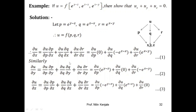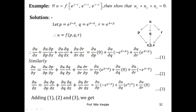Now adding ∂u/∂x + ∂u/∂y + ∂u/∂z, we have nine terms on the right-hand side. The ∂u/∂q term from ∂u/∂x cancels with the ∂u/∂q term from ∂u/∂y (opposite signs). The ∂u/∂r term from ∂u/∂y cancels with the ∂u/∂r term from ∂u/∂z. The ∂u/∂p term from ∂u/∂z cancels with the ∂u/∂p term from ∂u/∂x. All three pairs cancel, giving zero — hence proved. I hope you understood what a composite function is and how to differentiate it.